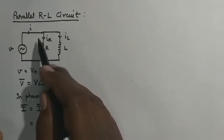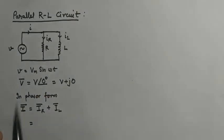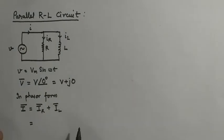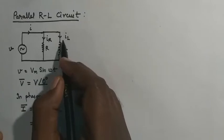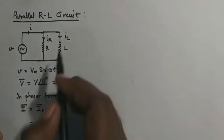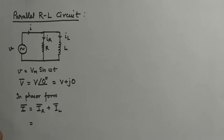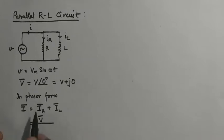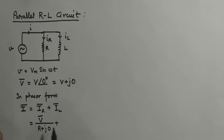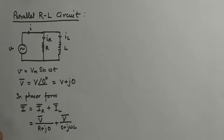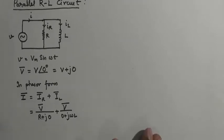In place of IR we can write V divided by the impedance of the resistive branch. The impedance of the resistive part is R + j0, meaning there is no imaginary part, whereas the impedance of the inductive branch is 0 + jωL, containing only the inductive reactance. So IR equals V divided by (R + j0) and IL equals V divided by (0 + jωL), where ωL is the inductive reactance XL.